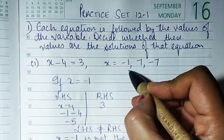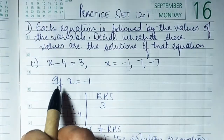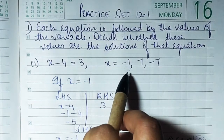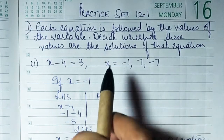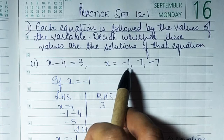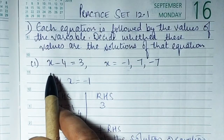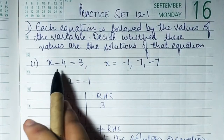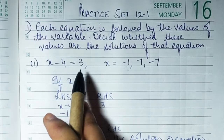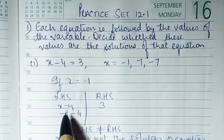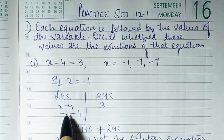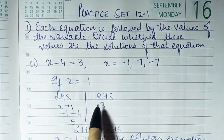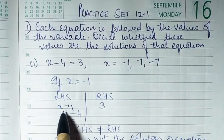For the value x = -1, insert -1 in place of x. Divide the equation into two parts: LHS and RHS. LHS is x minus 4, and RHS is 3. So we have x minus 4 on the left side.